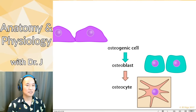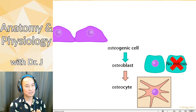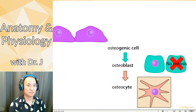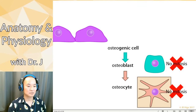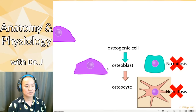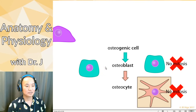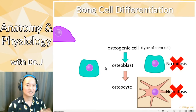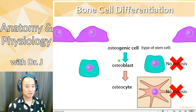Osteoblasts actually don't undergo mitosis — as a cell gets more differentiated, it gets harder for it to create exact copies of itself. Osteocytes don't undergo mitosis either. So if an osteoblast or osteocyte dies, how do you replace them? You make more osteogenic cells. Stem cells renew and regenerate — so to generate more osteoblasts and osteocytes, you just make more of the stem cells, the osteogenic cells.